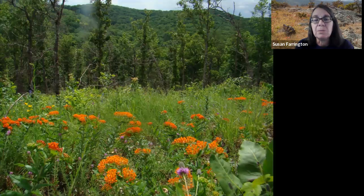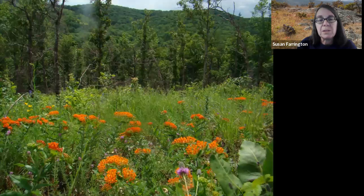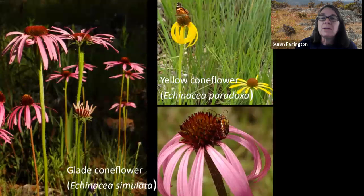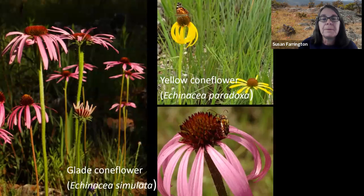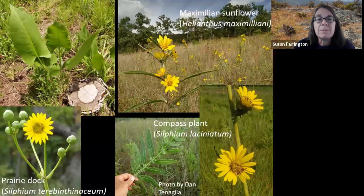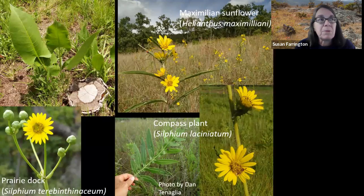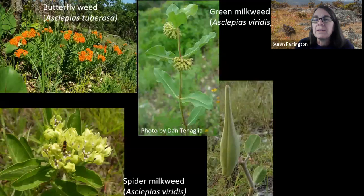Calcareous glades — both dolomite and limestone — share many of the same species, and are some of the most species-rich habitats in Missouri. Some of the key indicator species include glade coneflower, which is very similar to pale purple coneflower, which is more commonly found in prairies. Also yellow coneflower, which has a more limited range than glade coneflower. Prairie dock, easily identified by its huge leaves, compass plant, and Maximilian sunflower are all found on glades, but all three of these species could be found on prairies as well.